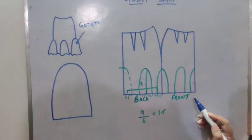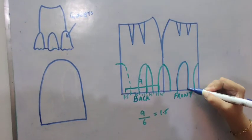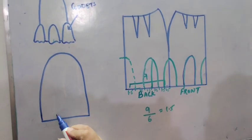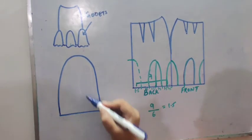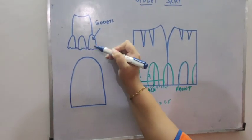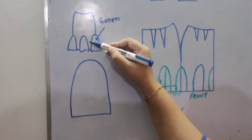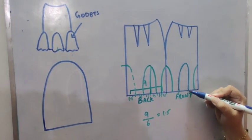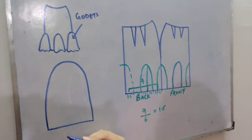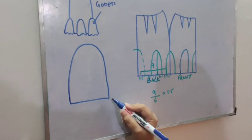As you can see, I have removed this Godet part and zoomed it here. Now as you can see in the diagram, this is the flared one, but right now we don't have flare here. So we will be using the slash and spread technique to give flare.